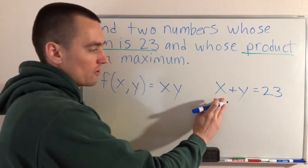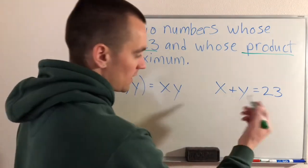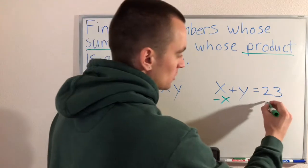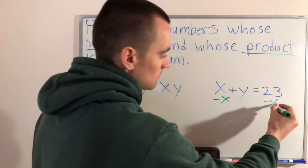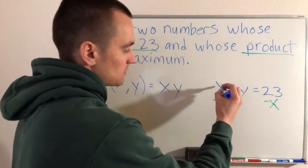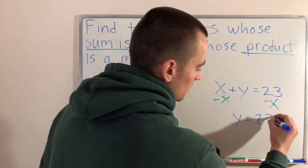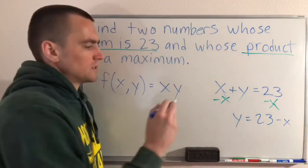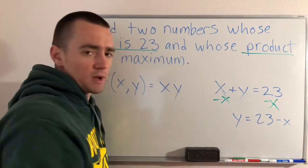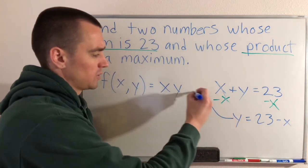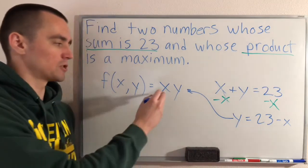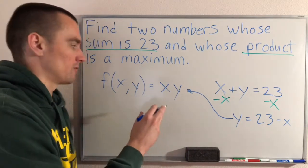So given this we can take this equation and solve for one of our variables. Let's just solve for Y, for example. It doesn't really matter which one you solve for, but I'm just going to pick Y. So doing that, subtracting X over to the other side, will give us Y equals 23 minus X. So since we know Y equals 23 minus X, we can take this and plug it into our multivariable function over here and that'll leave us with a single variable function which we know how to maximize.